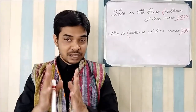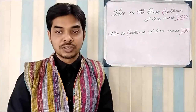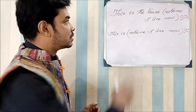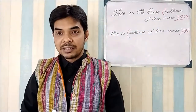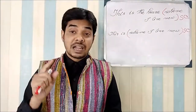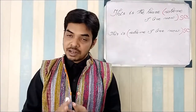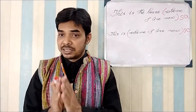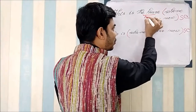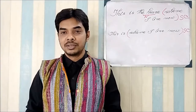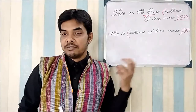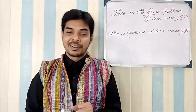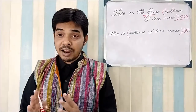Let me answer it. The two options causing confusion are: the adverb clause and the relative clause. The confusion arises because both speak of place. In the first sentence, 'this is the house where I live now,' it speaks of place, so you might think it's an adverb clause. In the second sentence it also speaks of place. But 'the house' is a noun, and 'where I live now' describes that noun — so is it an adverb clause or a relative clause? That's exactly where the confusion comes in.